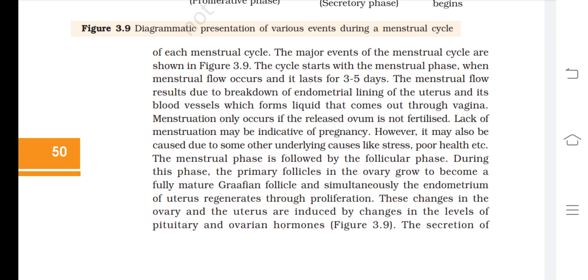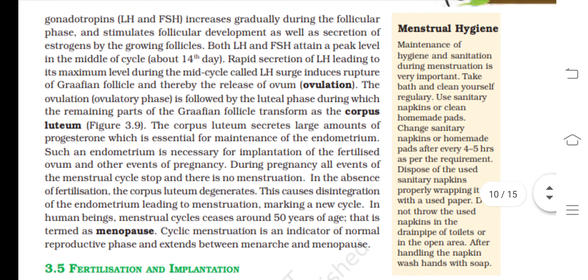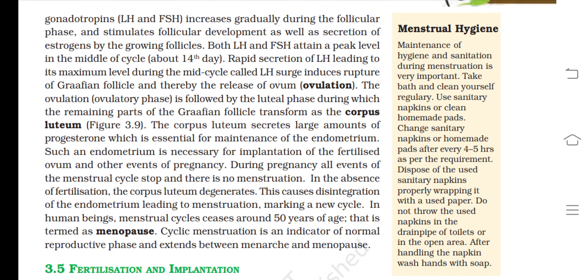The secretion of gonadotrophins (LH and FSH) increases gradually during the follicular phase and stimulates follicular development as well as estrogen secretion by the Graafian follicles. Both LH and FSH attain a peak level in the middle of the cycle (about 14th day). A rapid secretion of LH — called the LH surge — induces rupture of the Graafian follicle and thereby the release of the ovum (ovulation).